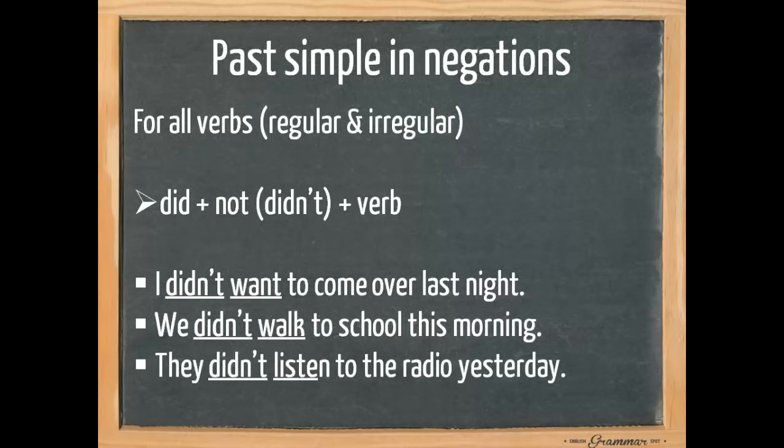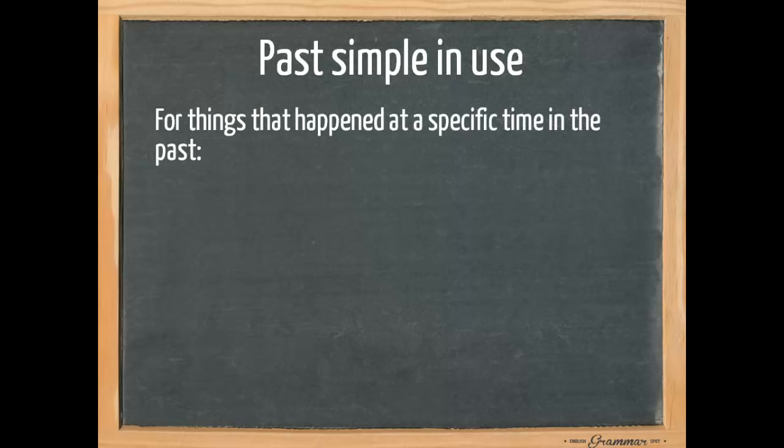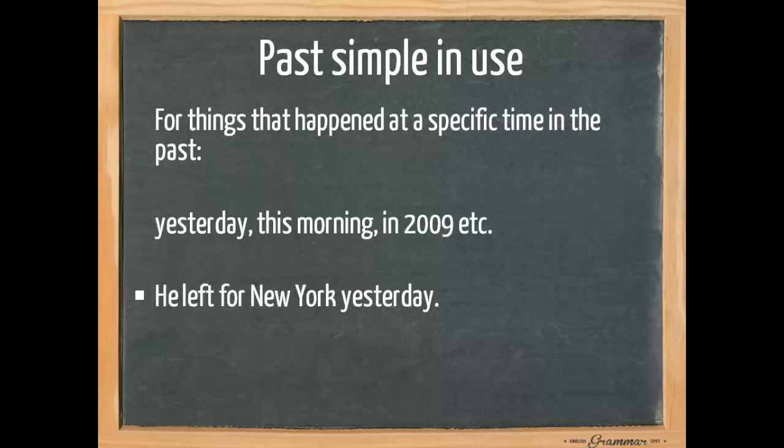Now let's have a look at the past simple in use. We use the past simple for things that happened at a specific time in the past, so we need to know when it happened. For example, yesterday, this morning or in 2009. He left for New York yesterday. We ate our breakfast this morning. They got married in 2009.